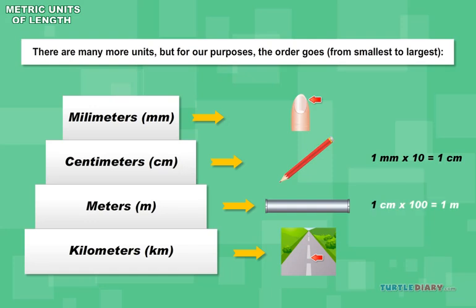1 centimeter times 100 is 1 meter. 1 meter times 1,000 equals 1 kilometer.